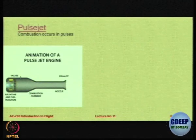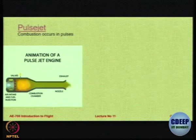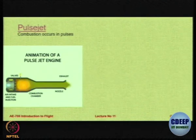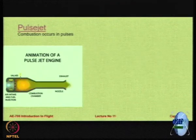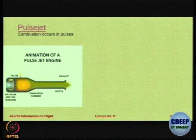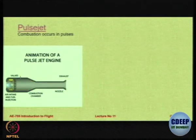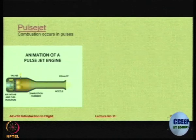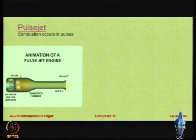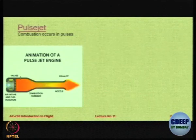This is the animation of how a pulse jet works. The key in a pulse jet is the availability of a series of valves in the front. In slow motion you will see the air intake — air comes in. Because of pressure the valve opens; when it goes inside you ignite, the back pressure closes the valve, and the combustion products exhaust out the back. When that happens, the valve again opens.